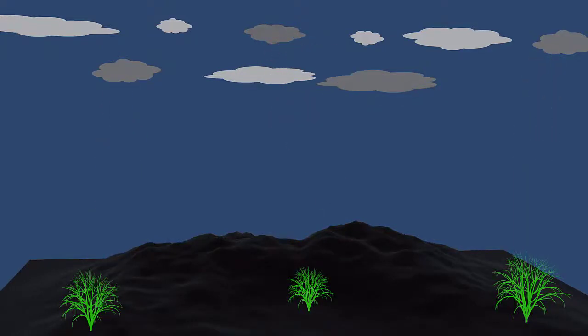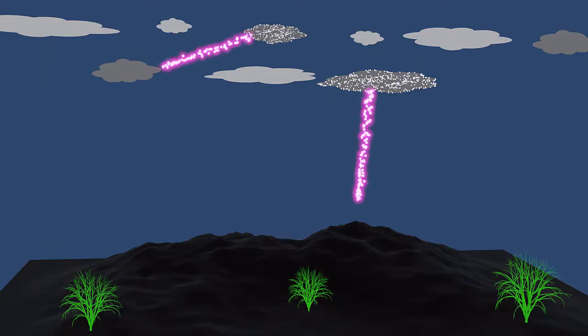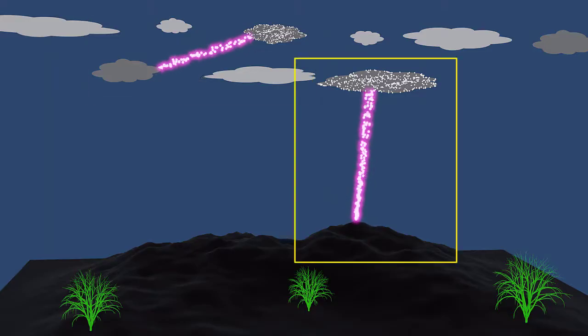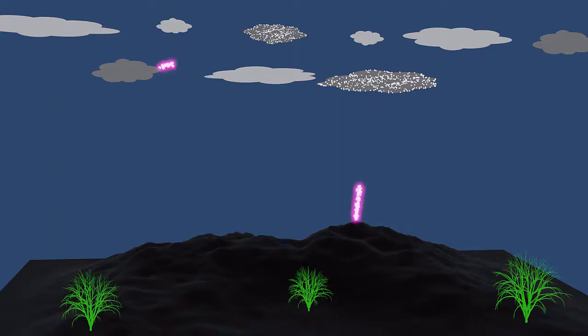Electricity can be seen in nature in a bolt of lightning. Lightning is nothing but the uncontrolled flow of a large number of electrons from one cloud to another, or from a cloud to the ground, releasing a huge amount of energy.